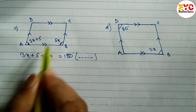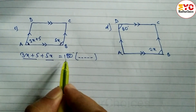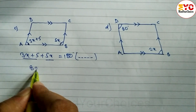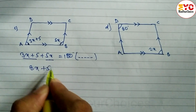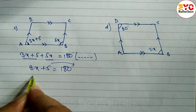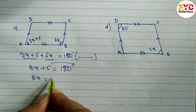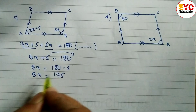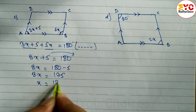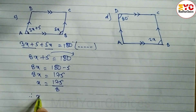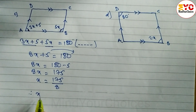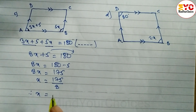The reason we write is that they are co-interior angles. When you add both co-interior angles we get 180 degrees. So 5x plus 3x gives 8x, and 8x plus 5 is equal to 180. We take the 5 to the other side: 8x is equal to 180 minus 5, so 8x is equal to 175. In multiplication we divide, so x is equal to 175 divided by 8.